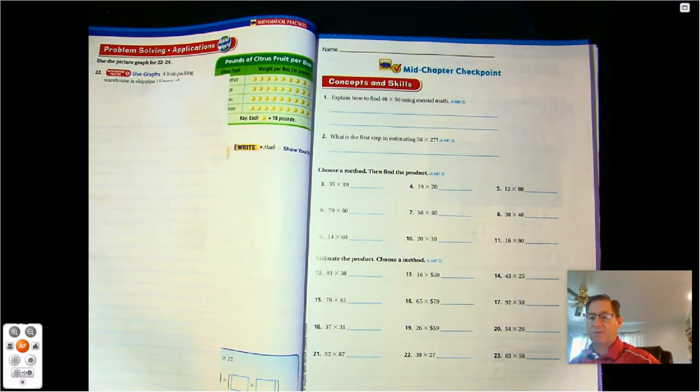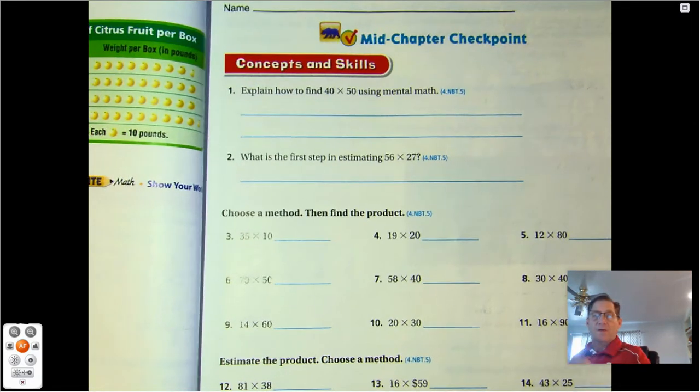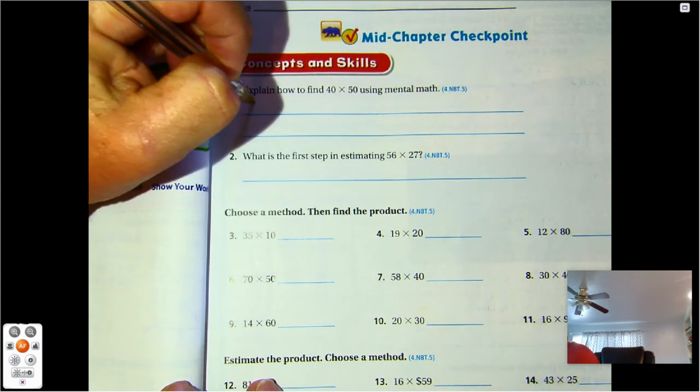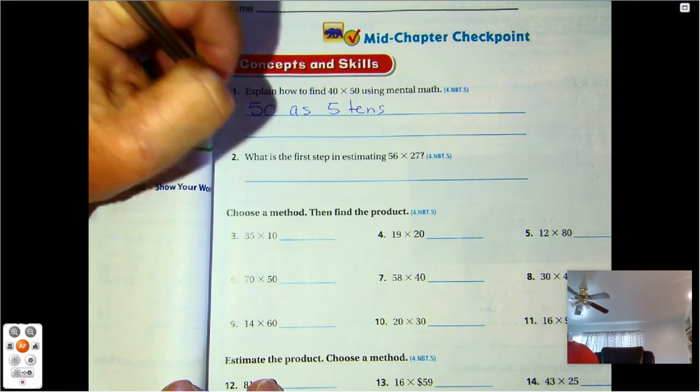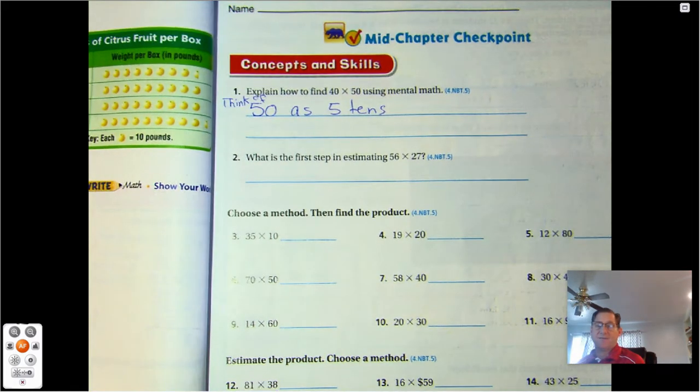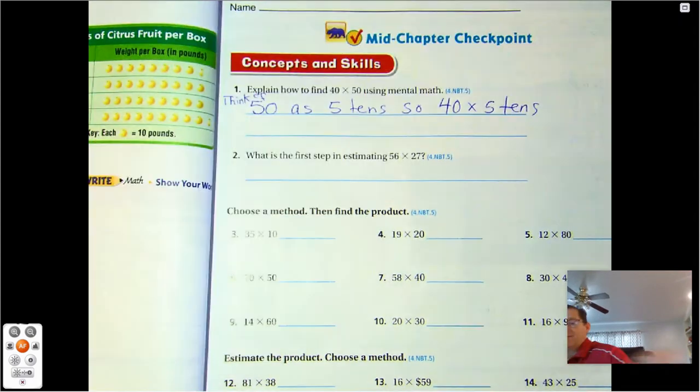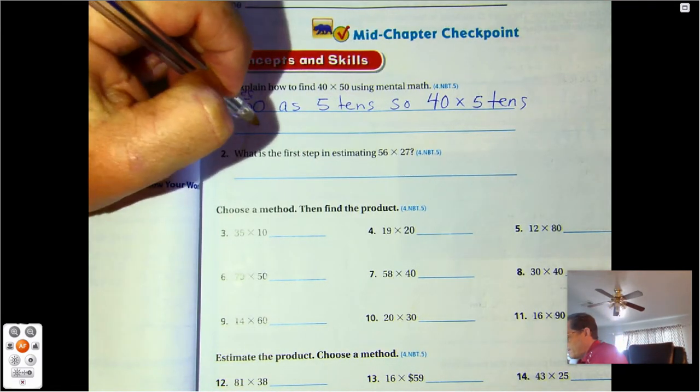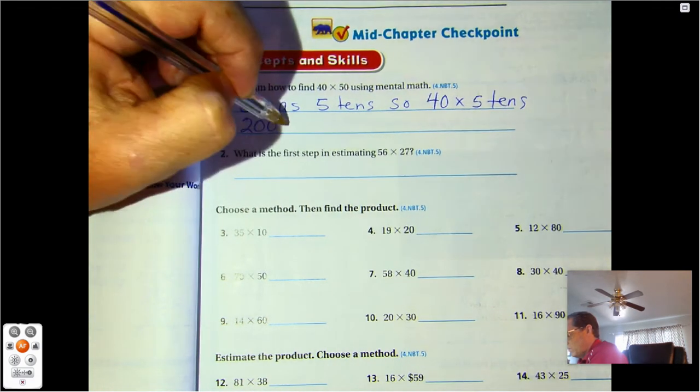Hello. Today we're going to be talking about the mid-chapter checkpoint for chapter 3. So explain how to find 40 times 50 using mental math. Well we have talked about some different strategies, but why don't we think of 50 as five tens. So 40 times five tens, and five times four is 20. So we have two hundred tens or 2,000.